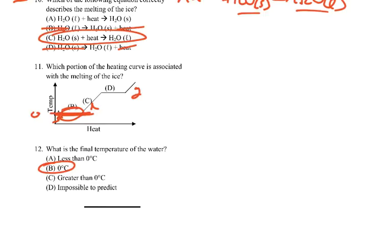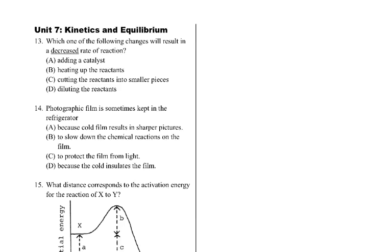That is unit 6 — equations, phase changes, and the heating curve. Moving into number 7, which is kinetics and equilibrium. Which of the following changes will result in a decreased rate of reaction? Adding a catalyst speeds it up. Heating up the reactants speeds it up. Cutting reactants into smaller pieces speeds it up. Diluting — lowering the concentration — would decrease the rate of reaction. So the answer is D.